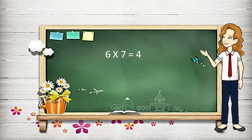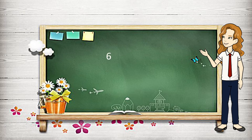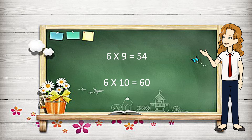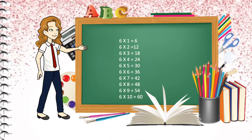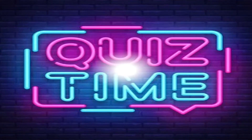Six nines are fifty-four, six tens are sixty. We have learned the table of six. I have made videos of tables 1 to 20 in English and Hindi. Are you ready for a quiz? Now let's start the quiz.